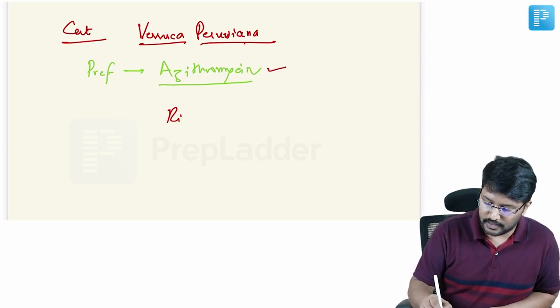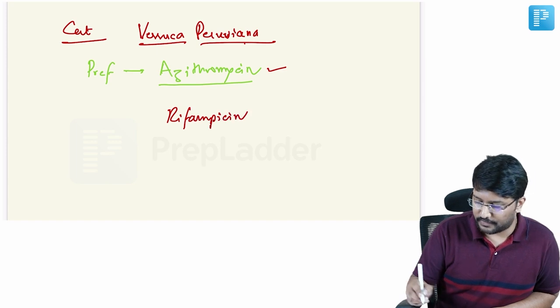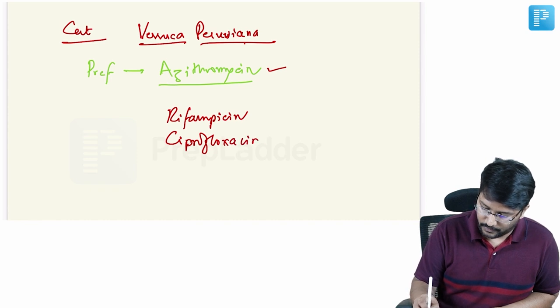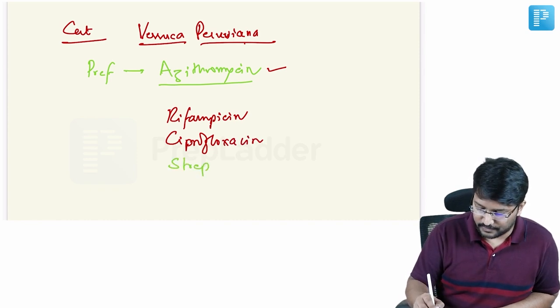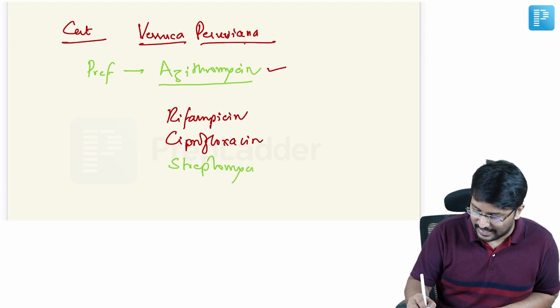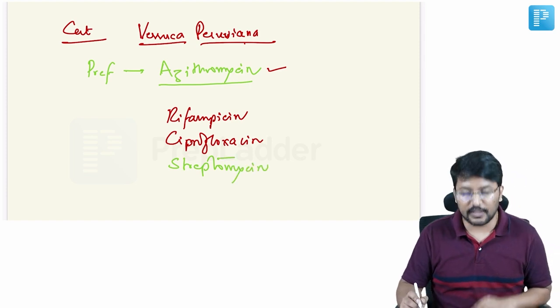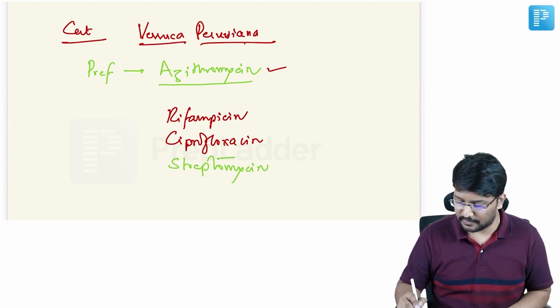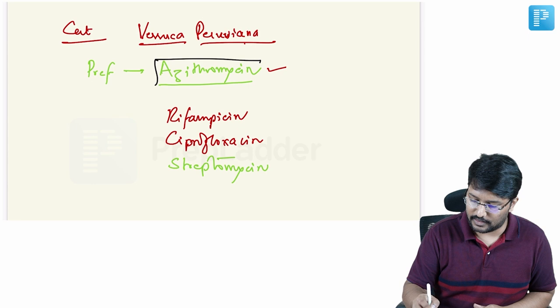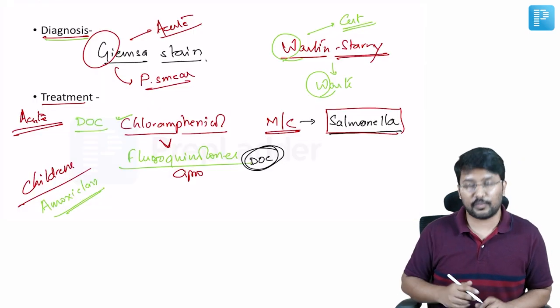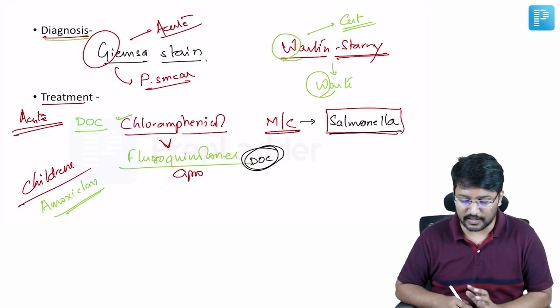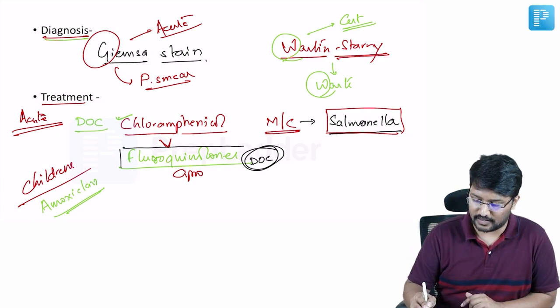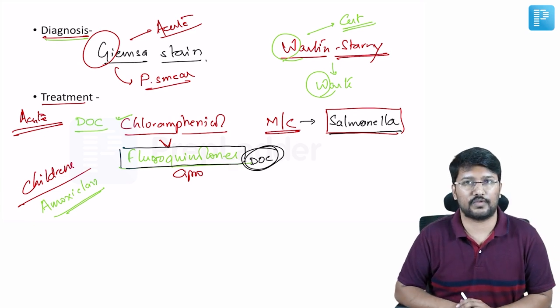Alternatives include rifampicin. Alternatives include rifampicin, ciprofloxacin or even parenteral streptomycin. This can be used when we are dealing with the case of Verruca peruviana. But the preferred drug I want you to remember specifically is azithromycin. Now the preferred drug is azithromycin when it comes to cutaneous Carion's disease and when it comes to Oroya fever the preferred drug is fluoroquinolones plus or minus other agents.